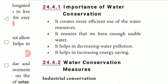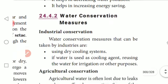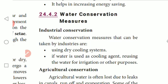Water conservation measures: First, industrial conservation. Water conservation measures that can be taken by industries include measuring the quantity of water used and using a dry cooling system.